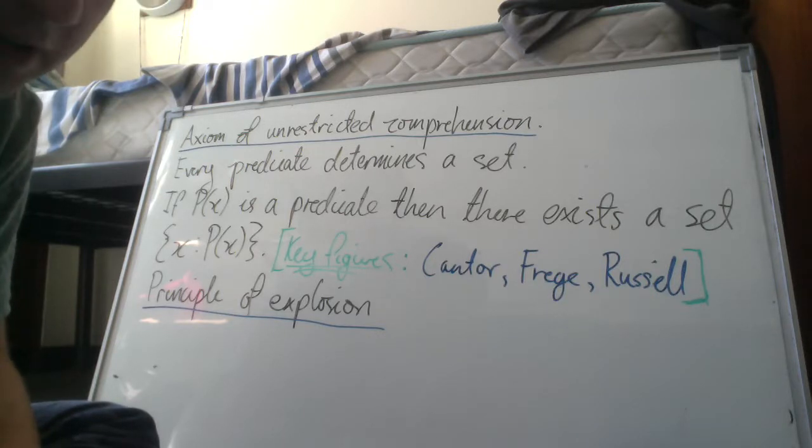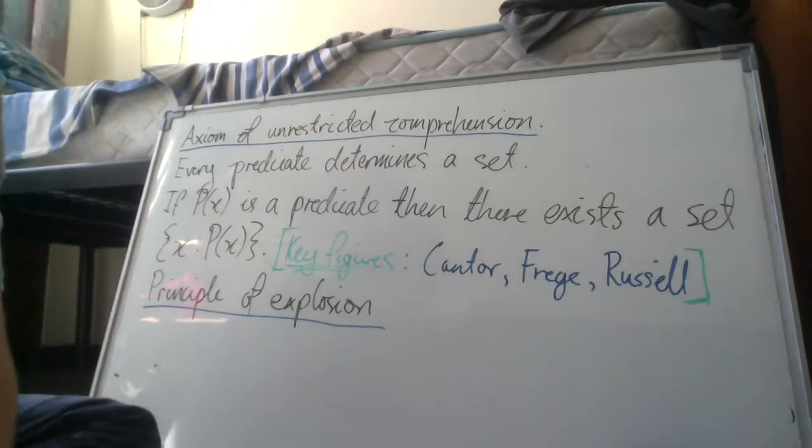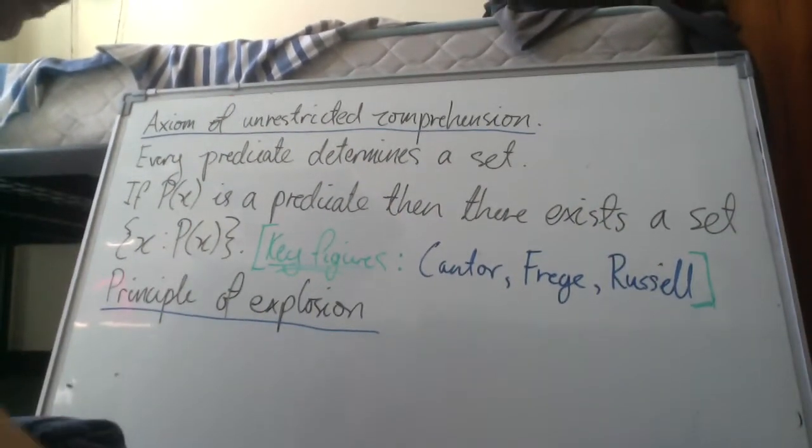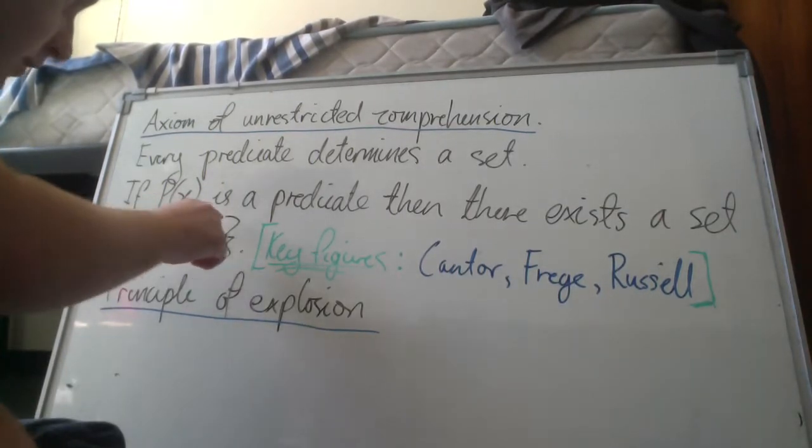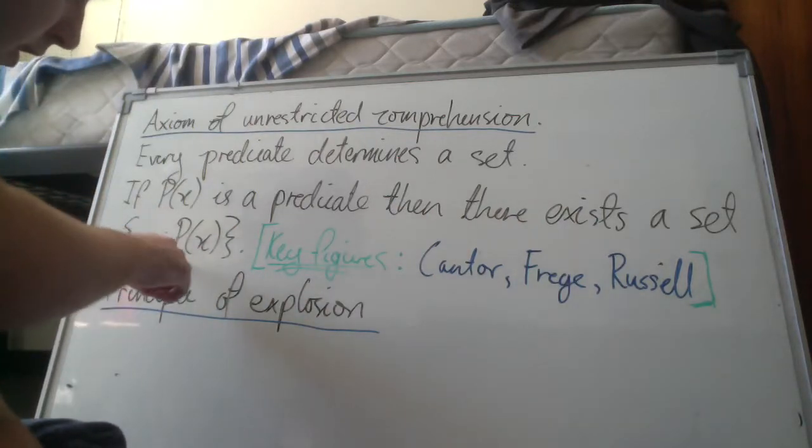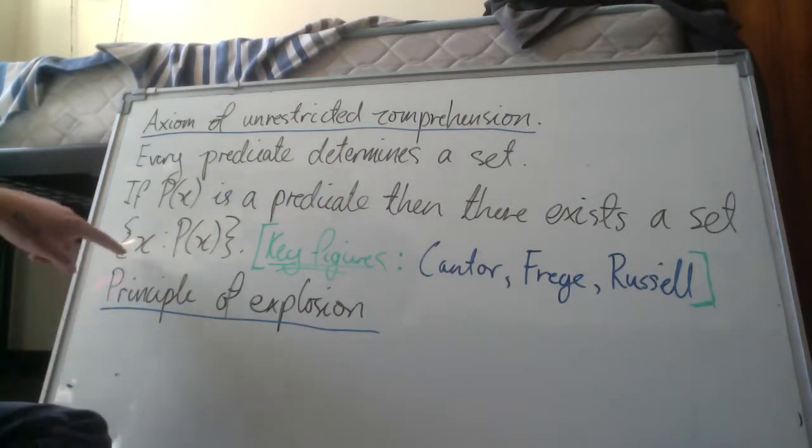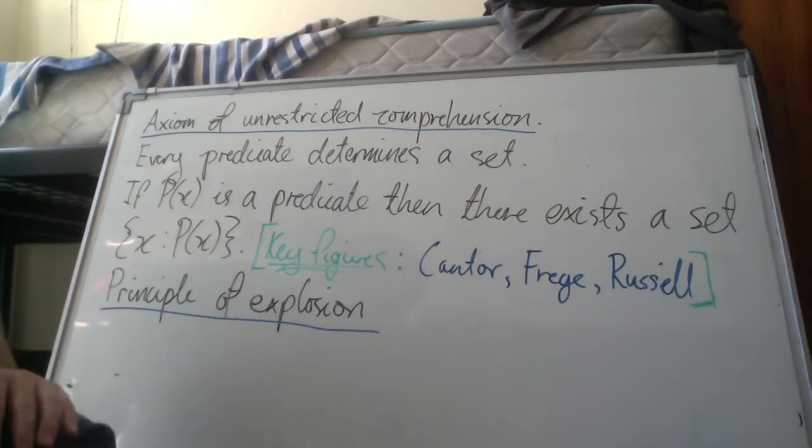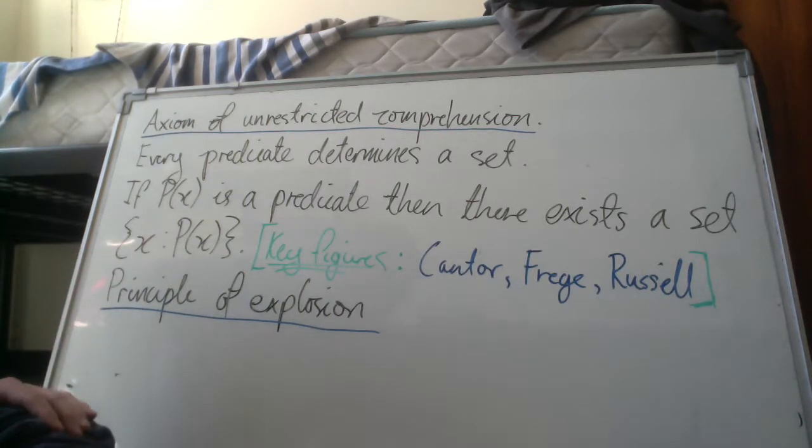Another slightly more symbolic way of stating the axiom is: if P(x) is a predicate then there exists a set X such that X equals the set of all x such that P(x) is true. This is set builder notation here. There is no implicit set which x is already a member of.